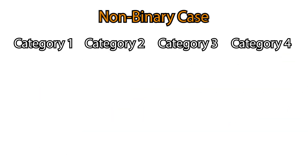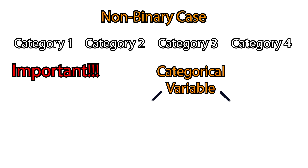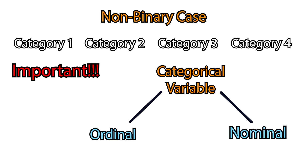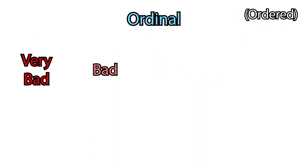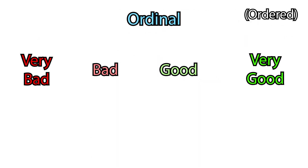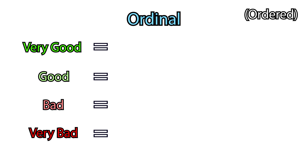But what if we have four categories? There is an important point here. Categories can be either ordinal or nominal, meaning that they either can have an order or be unordered. For instance, you can have very bad, bad, good, and very good — which is ordinal data. These categories have an order or ranking, so we can confidently map them to numbers.